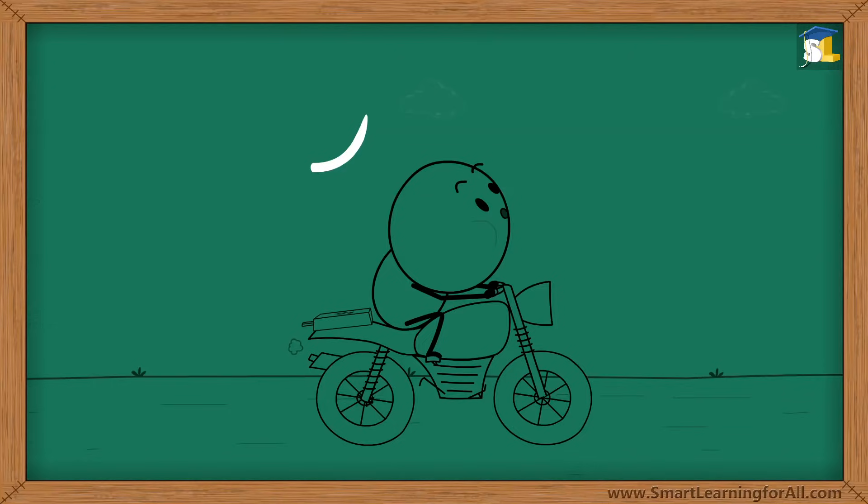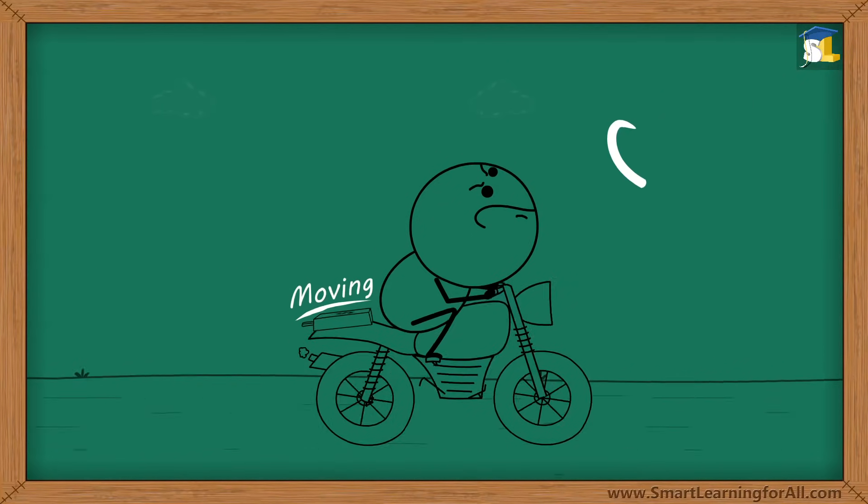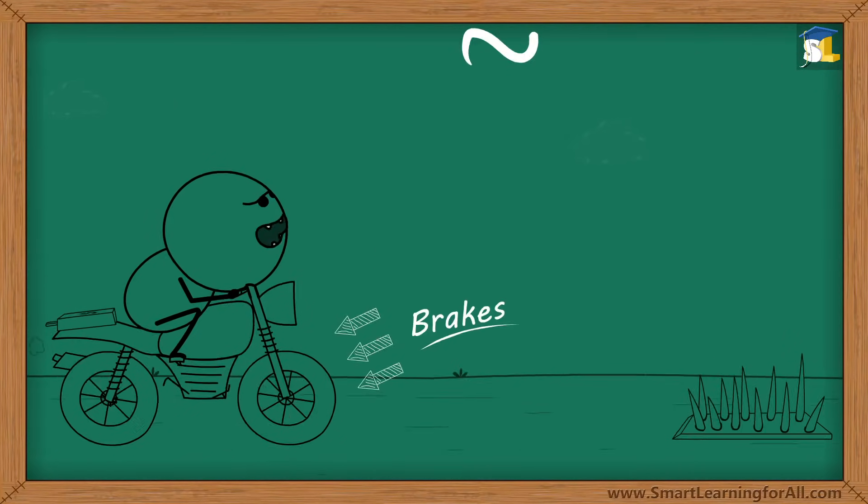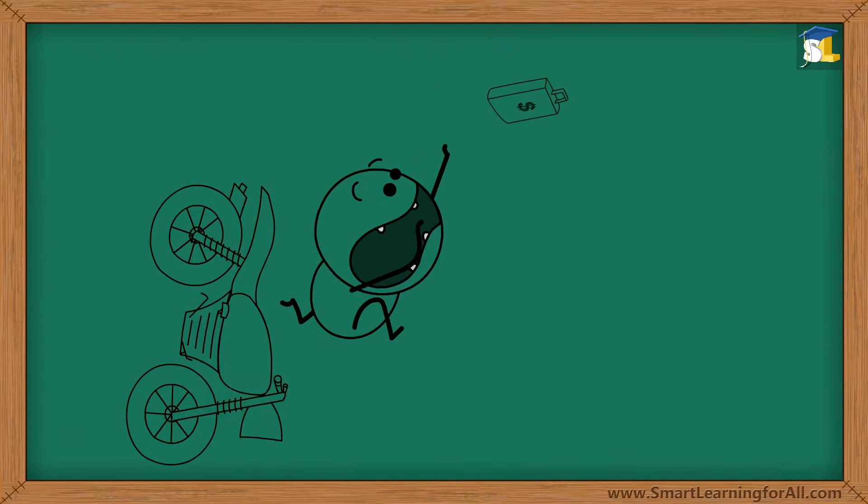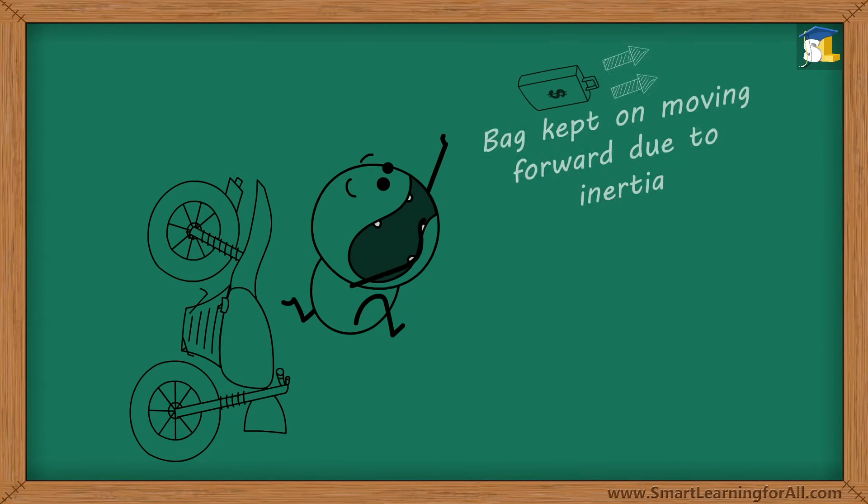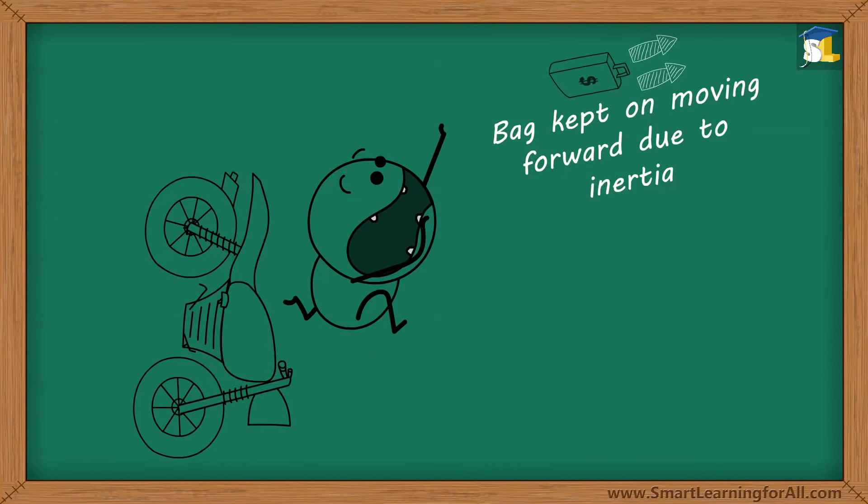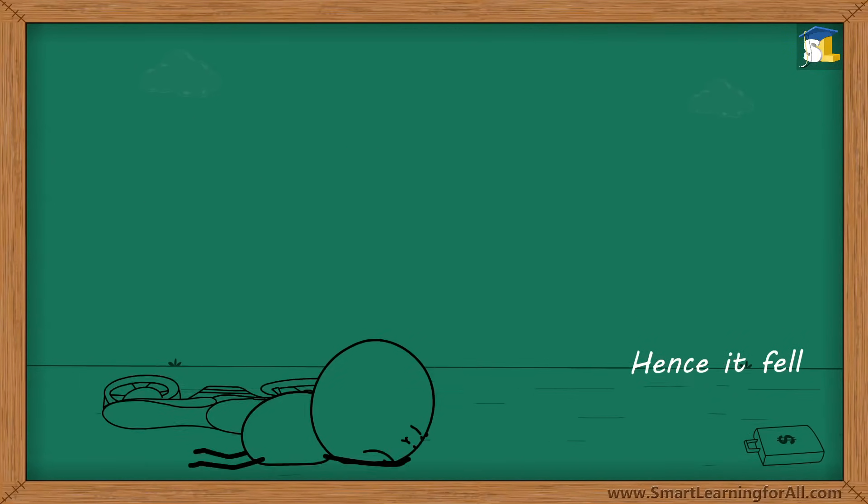So, in this case, when the bag was on the bike, it was moving along with the bike. Now, when brakes were applied suddenly, the bike stopped but the bag kept on moving forward due to inertia of motion and hence it fell.